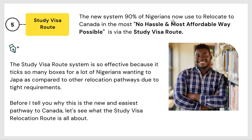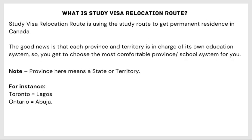The route we are talking about is the study visa route. The new system that 90 percent of Nigerians now use to relocate to Canada in the most no-hassle and most affordable way is via the study visa route. The study visa route system is so effective because it ticks so many boxes for Nigerians wanting to Japa compared to other relocation pathways with their rigid requirements.